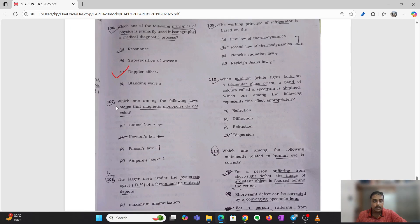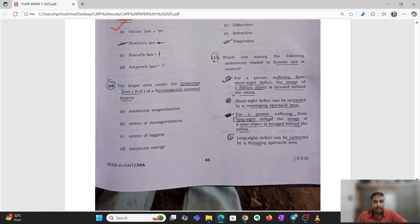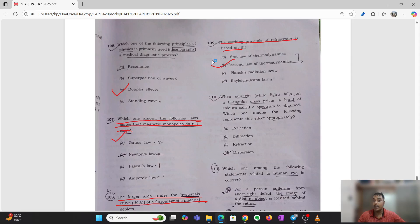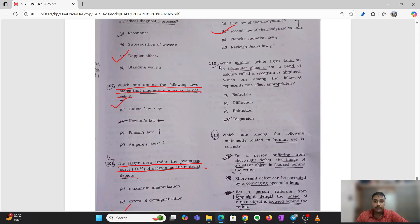Next, which one among the following laws states that magnetic monopoles do not exist? That is Gauss law. The larger area under the hysteresis curve of ferromagnetic material is extent of lagging, answer is C. After that, the working principle of the refrigerator is based on second law of thermodynamics. When sunlight, that is white light, falls on triangular glass prism, a band of colors called spectrum is obtained. This effect is dispersion.